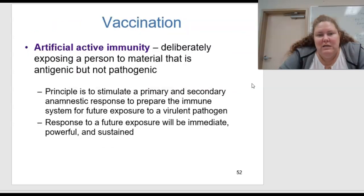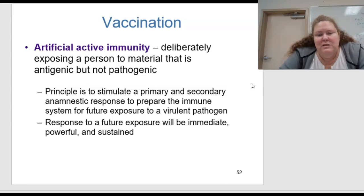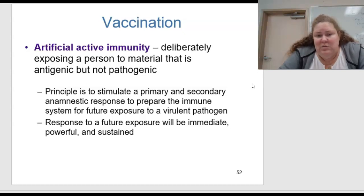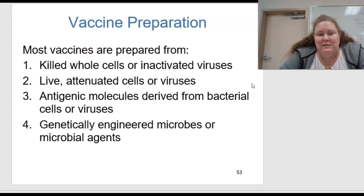Vaccination is artificial active immunity — deliberately exposing a person to material that is antigenic but not pathogenic. The principle is to stimulate a primary and secondary anamnestic response to prepare the immune system for future exposure to the virulent pathogen, so it can react quicker and fight it off. The response to future exposure will therefore be immediate, powerful, and sustained.